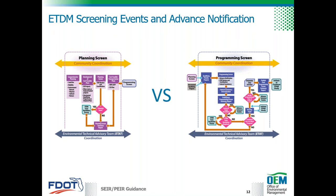This graphical flow chart shows the ETDM process. First, the district decides whether to initiate project screening with either an ETDM planning screen or a programming screen event, based upon project complexity and timing. The ETDM planning screen should occur when considering projects for inclusion in a cost feasible plan. During the planning screen, comments from the Environmental Technical Advisory Team or ETAP members and the public help FDOT and metropolitan planning organizations identify environmental considerations to assist in assessing projects for the long-range transportation plan.